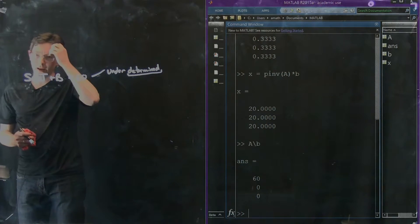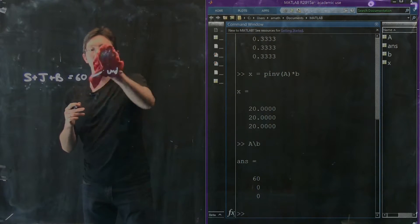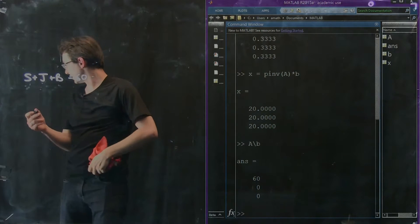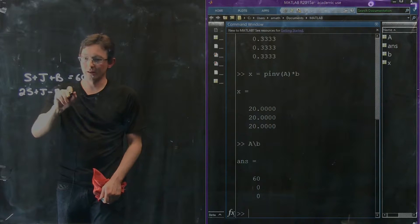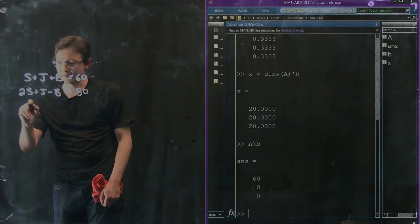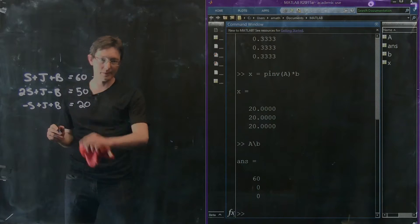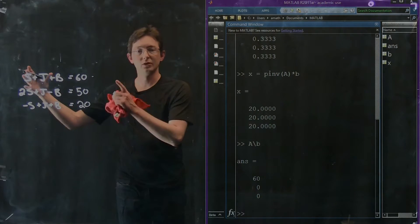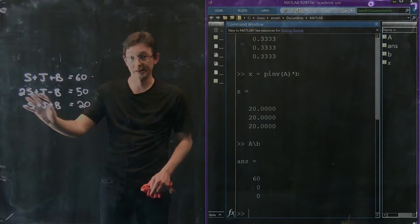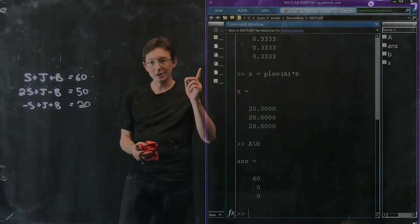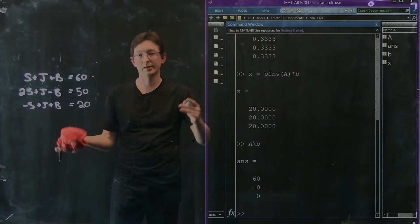Now, what if I take my original system, so this is underdetermined, but now let's go back to the system where I actually had enough information to solve it. I think it was 2 Sally plus John minus Bob is 50. And then we had minus Sally plus John plus Bob equals 20. This was my kind of determined, uniquely determined system. So there's one solution for Sally, John, and Bob's age that uniquely satisfy all three of these equations. And in general, you need three equations if you have three unknowns, if you have nine unknowns, you need nine equations, and so on and so forth.